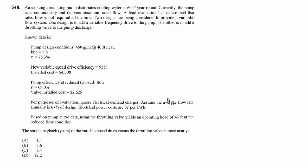Pump efficiency at reduced choked flow efficiency is 69%, and the valve installed cost is $2,625. For purposes of evaluation, ignore electrical demand charges. Assume the average flow rate annually is 67% of design. Electrical power costs are $0.08 per kilowatt hour. Based on pump curve data, using the throttling valve yields an operating head of 43 feet at the reduced flow condition. The simple payback in years of the variable speed drive versus the throttling valve is most nearly what?